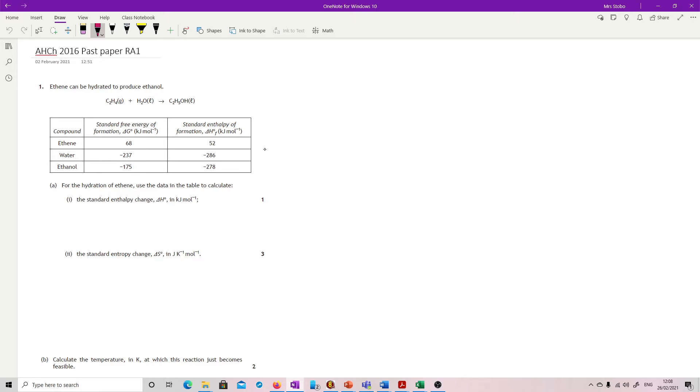Okay, question one. Ethene can be hydrated to produce ethanol. We have an equation. You'll see an awful lot, we've got our ΔG° and we've got our ΔHf. Standard enthalpy change in kilojoules per mole.